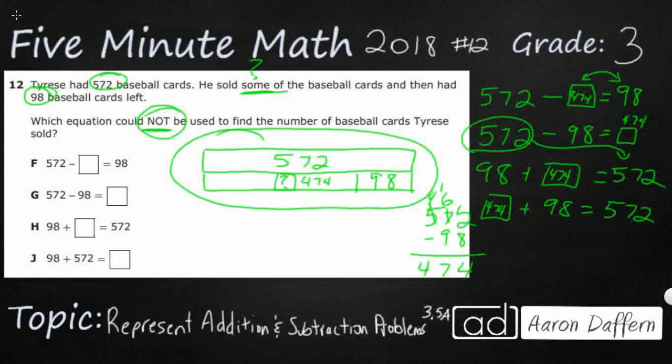This F, 572—that is our first one. So that is not the answer. Remember, we're looking for which one cannot be used. 572 minus 98. This is what we did here. So we've already nailed our first two. So it's going to be one of these addition problems. 98 plus box is this third one.